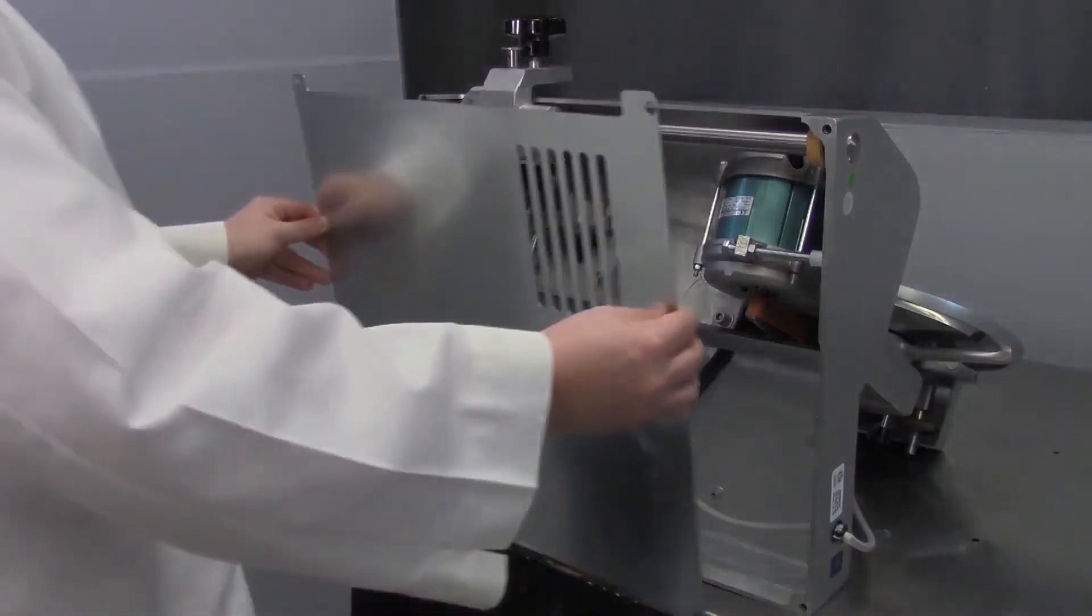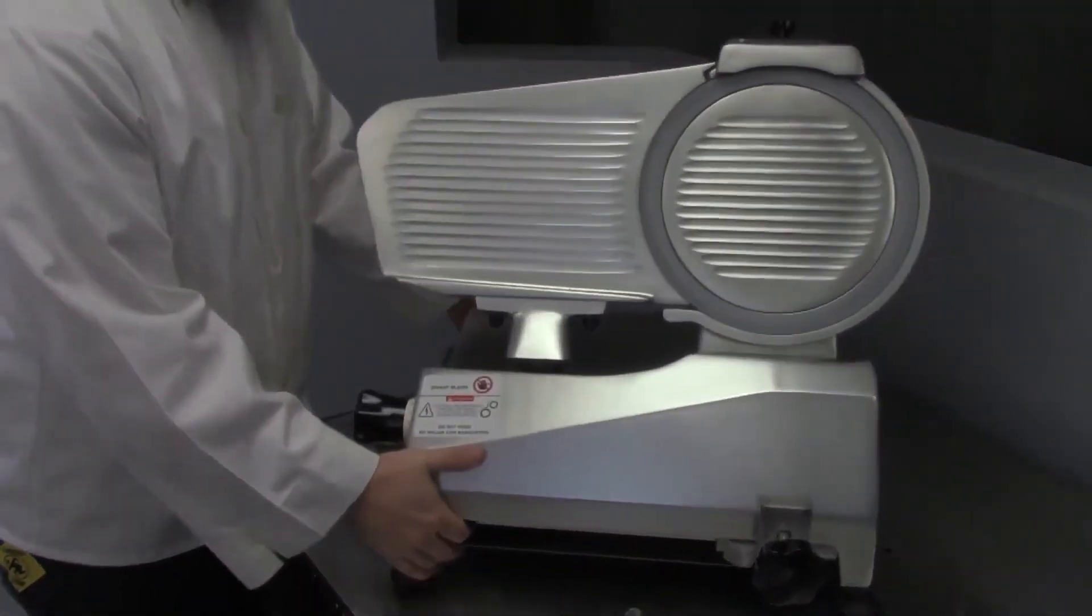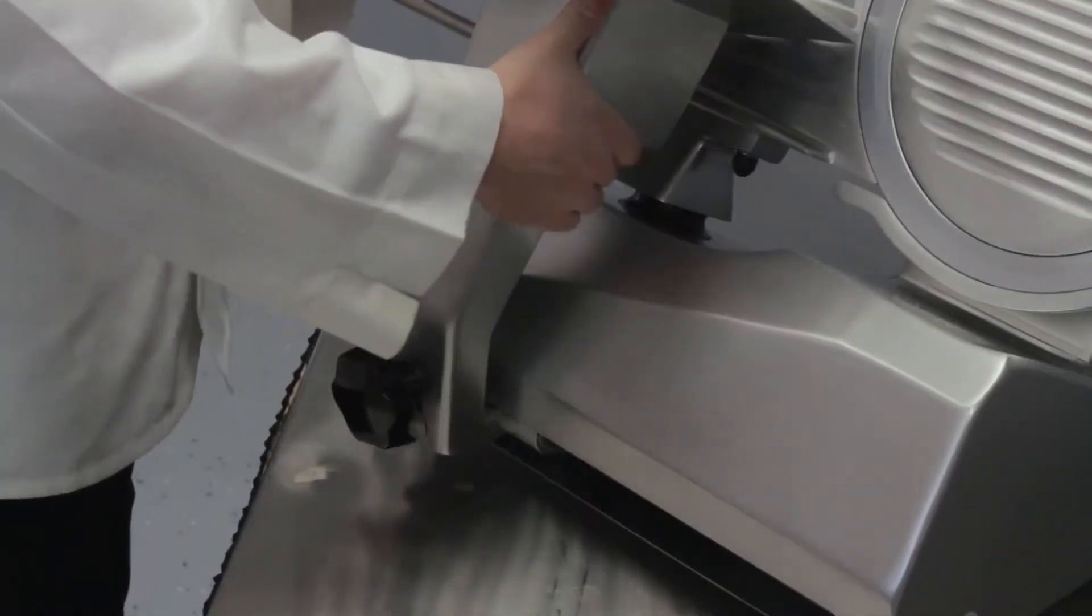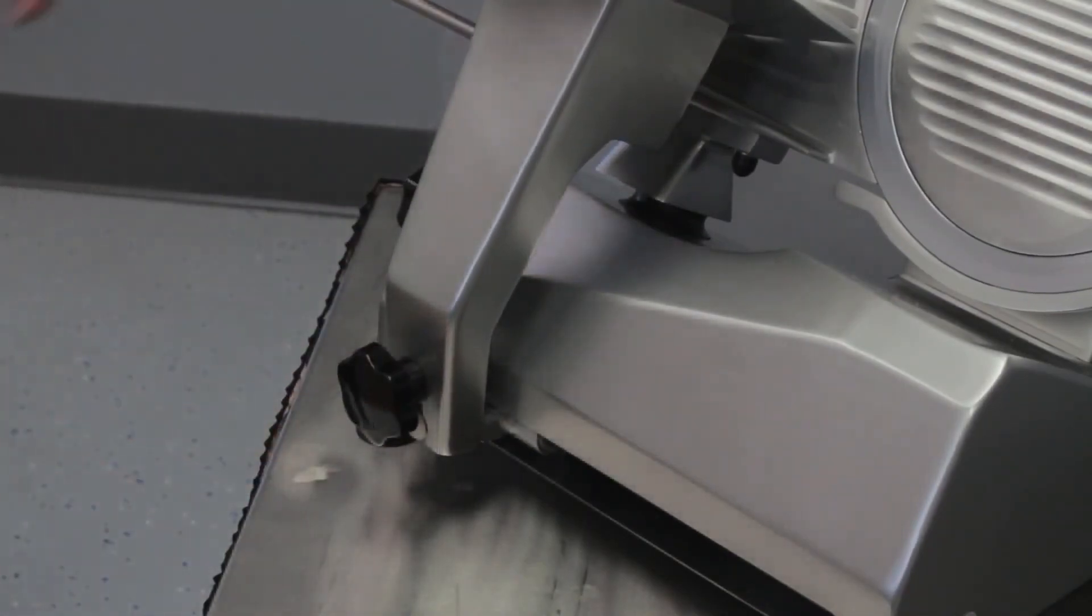Replace the bottom panel, secure it with the screws, and then reattach the feet. Carefully return the slicer to its normal position. Reattach the carriage and tighten the knob. The unit is now ready for operation.